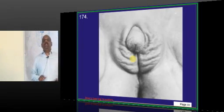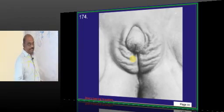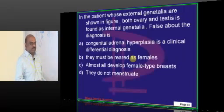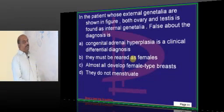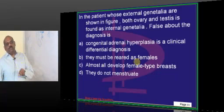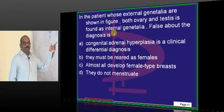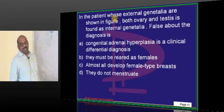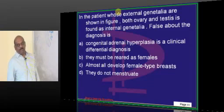Now, what do you find here? Clitoromegaly is what you are seeing. Clitoromegaly and hermaphroditism. But is it a pseudo-hermaphroditism or a true hermaphroditism? When examined, internal genitalia both ovary and testis is what you meant about true hermaphroditism.